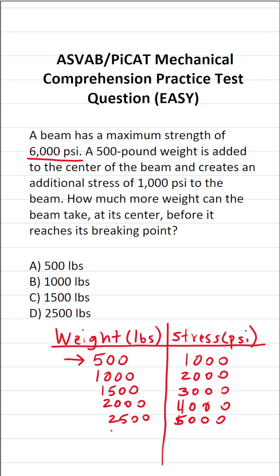And then finally, if we add 500 more pounds, that brings us to 3,000 pounds of weight on the beam. And that corresponds to 6,000 PSI of stress on the beam. And at this point, the beam would break. So according to the problem,